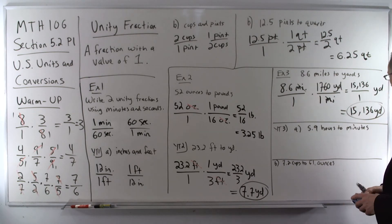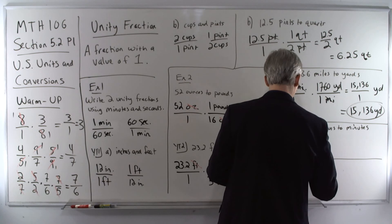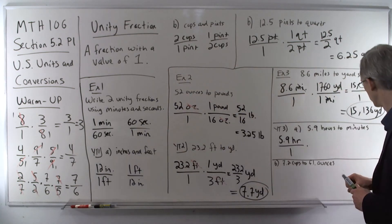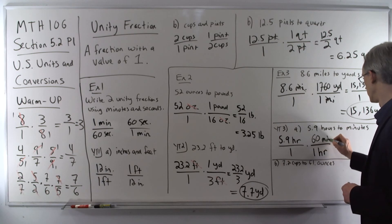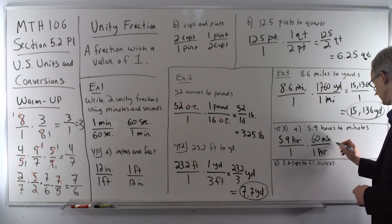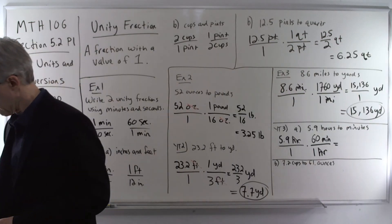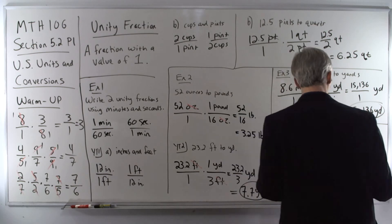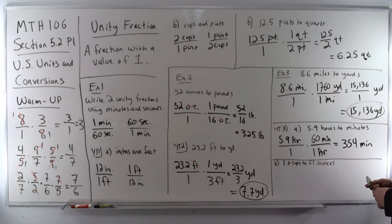Your turn number 3: 5.9 hours into minutes. We get 5.9 hours over 1. Multiply by the conversion factor between hours and minutes — there are 60 minutes in 1 hour. Position hours on the opposite side so they cancel. Multiply 5.9 times 60, and we get 354. It's a fraction over 1, so we go right to 354 minutes.